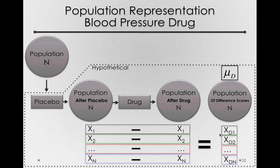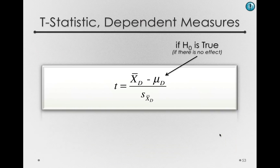Mu sub D is necessarily zero if there is no effect. If the null hypothesis is true — that is, if whatever our treatment is, it's no different than the placebo, and there's no actual effect of the drug — then if we have a population measured before and after taking a drug that does nothing, the population mean of the difference scores is zero. There is no change between those two populations. So even before doing the study, we know what mu sub D is: it is necessarily zero.